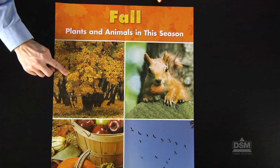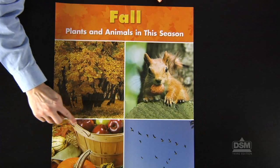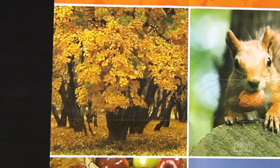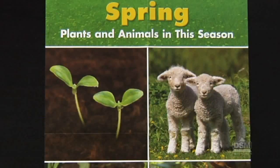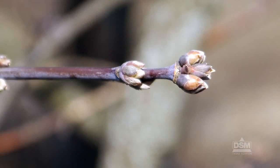Draw students' attention to the plant photographs on the left side of the poster and discuss the changes they see in the tree as the seasons change. In the fall, the leaves have bright colors and many are on the ground. In the winter, trees have no leaves and may be snow-covered. Grasses, flowers, and other plants sometimes look as if they're dead in winter. In spring, tiny green plant shoots begin to grow from the ground, trees begin to get buds and tiny leaves, and many plants have flowers. Lead students to recognize that in spring, temperatures generally rise and there may be more rainfall than in other seasons, and the warm weather and rain help plants grow.